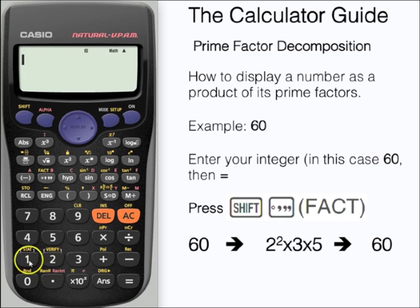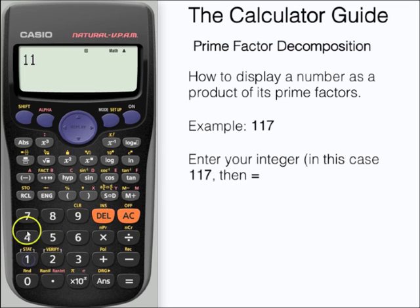Let's try that again, this time with 117. Enter the number and press equals, and then the function is shift and fact.